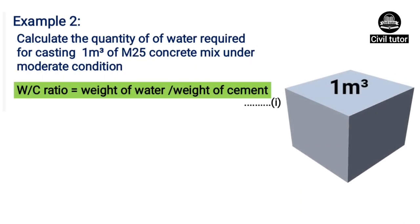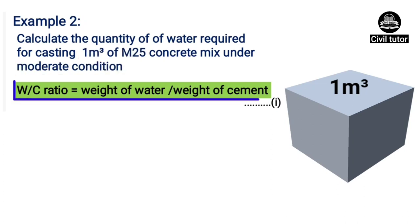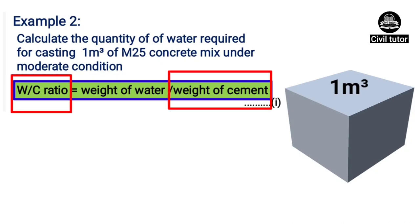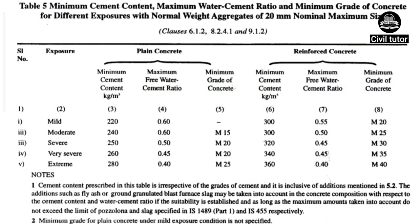Let's take another example in which we need to calculate the quantity of water required for casting 1 meter cube of M25 grade of concrete under moderate conditions. As we know, water cement ratio is the ratio of weight of water upon weight of cement. Using this equation, we need to calculate the weight of water, for which we need the water cement ratio and the weight of cement. As per table 5 of IS 456-2000, the water cement ratio for M25 grade of concrete under moderate conditions is equal to 0.5.